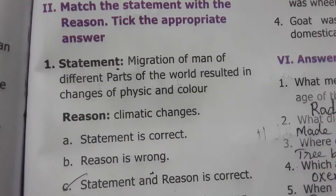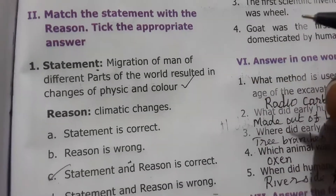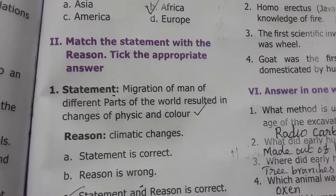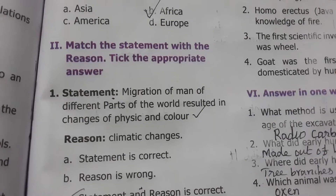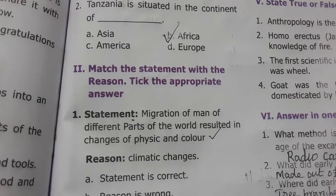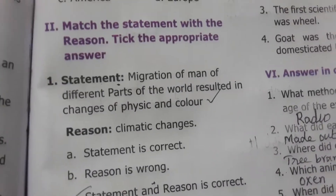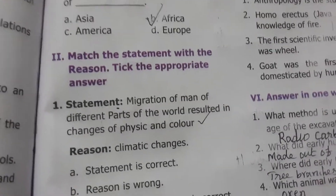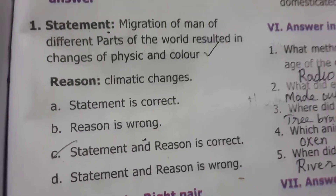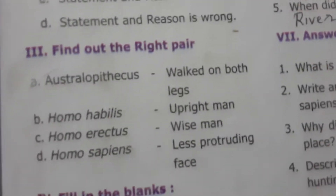Match the statement with the appropriate answer: Migration of man to different parts of the world has resulted in changes of physique and color. This is a correct statement because each country's people have their own skin color — in Africa the skin tone is highly dark, in England very fair, and in India it is a mixed tone. The reason is climatic changes, so both the statement and reason are correct.